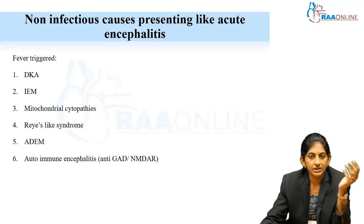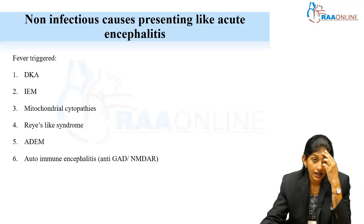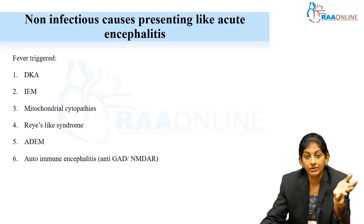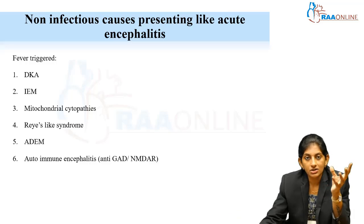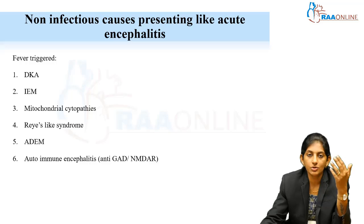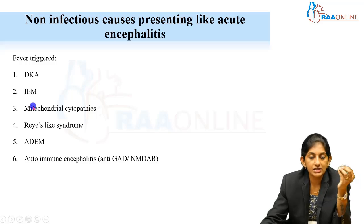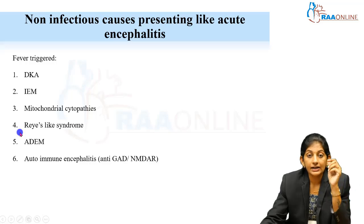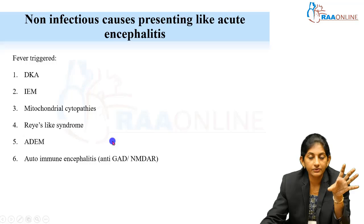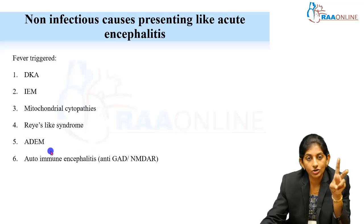DKA of course — when the child comes to you in altered sensorium, there is not going to be any fever, and in case of severe hypoglycemia, there can be seizures also. The clinical diagnosis will be acute encephalopathy, but the reason is DKA. Similarly, mitochondrial encephalopathy, mitochondrial cytopathies, some metabolic disorders, Reye-like illness — all these present as encephalopathy. ADEM and autoimmune encephalitis can all present as alteration in mental state with or without seizures.